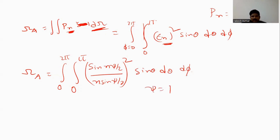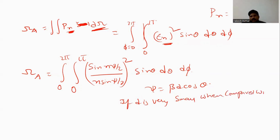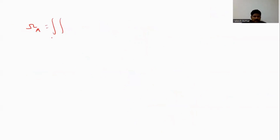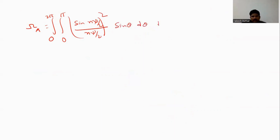For a broadside array, ψ equals βd·cos θ. If d is very small compared to the length of the array, we can approximate sin(ψ/2) ≈ ψ/2. Therefore Ωa becomes the double integral from 0 to 2π and 0 to π of [sin(Nψ/2) / (Nψ/2)] squared times sine θ dθ dφ. Since there is no φ component, we get 2π times the integral over θ.